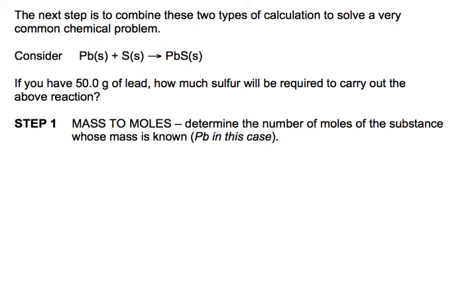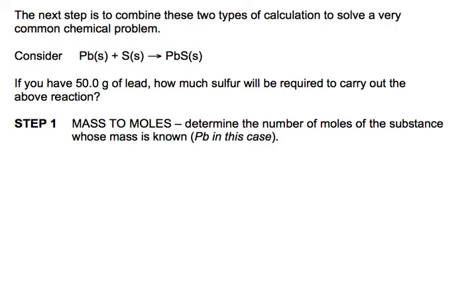Here's a question. There's our balanced chemical equation: lead plus sulfur yields lead(II) sulfide. If you look at it, it's balanced as written — one mole of lead, one mole of sulfur, one mole of lead(II) sulfide. The question is: if you have 50 grams of lead, how much sulfur in grams will be required to carry out the above reaction?